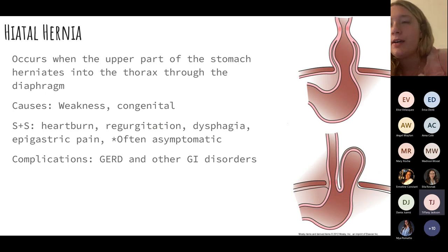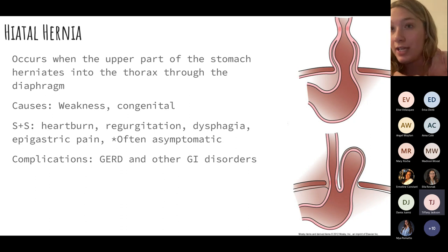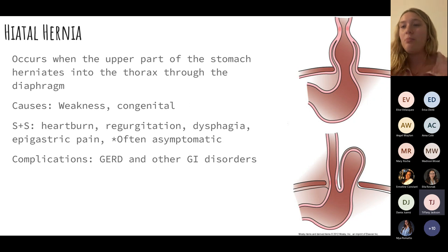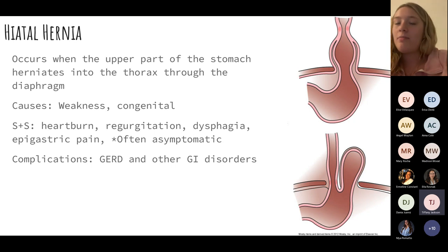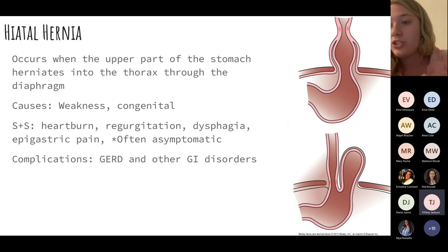A hiatal hernia occurs when the upper part of the stomach herniates into the diaphragm, causing lots of heartburn and regurgitation because everything gets pushed upward. It's similar to GERD, but instead of a functional issue with the LES, it's anatomical — the stomach is physically getting pushed up.